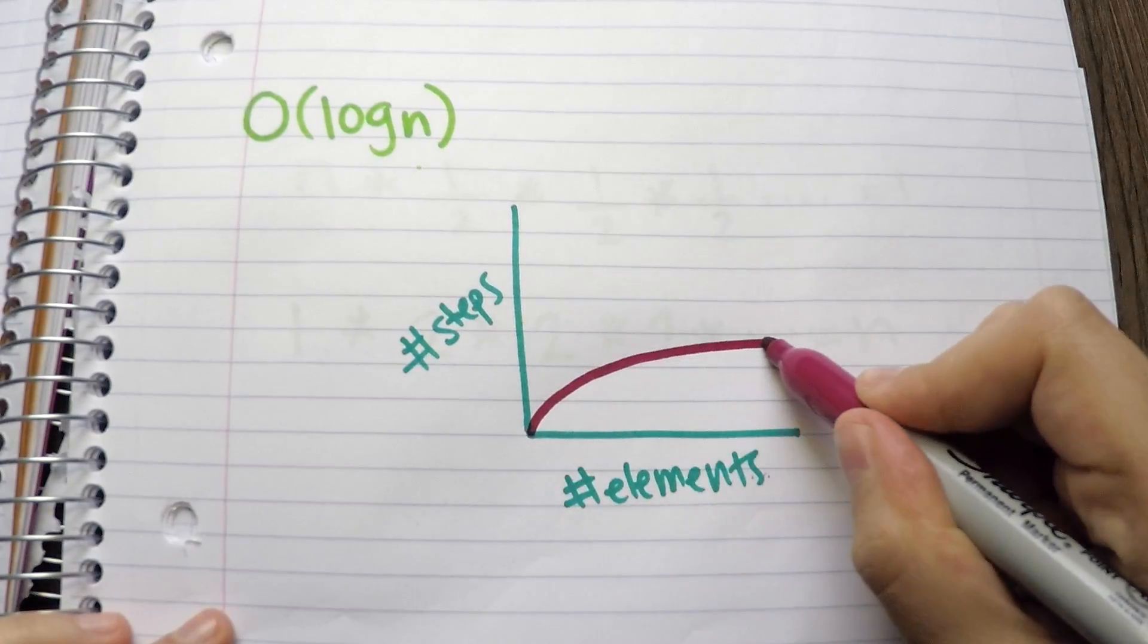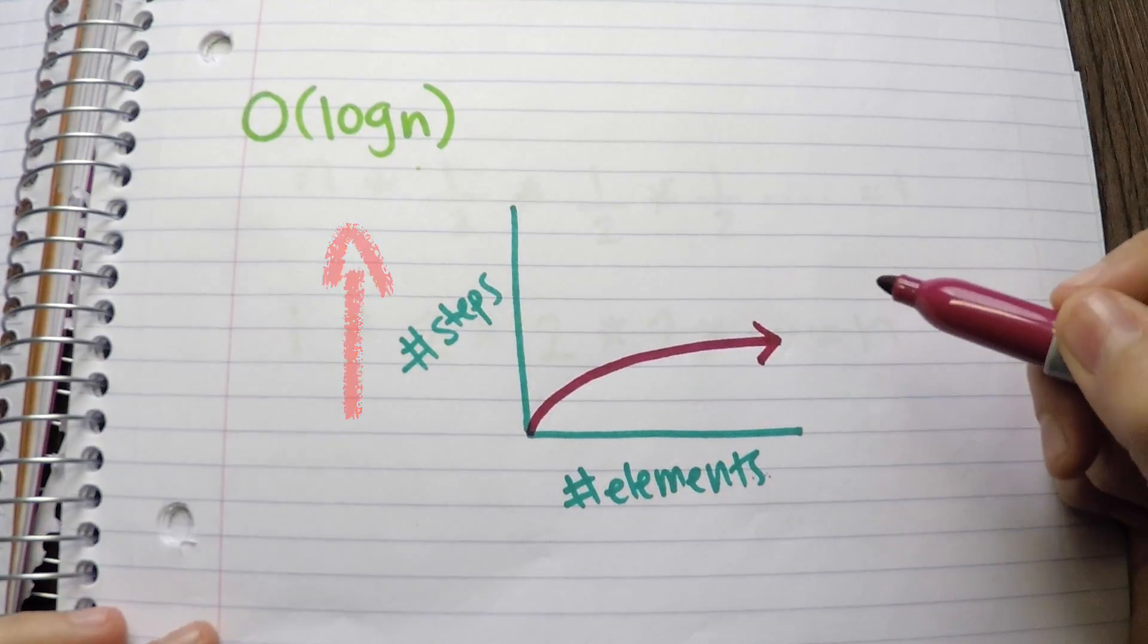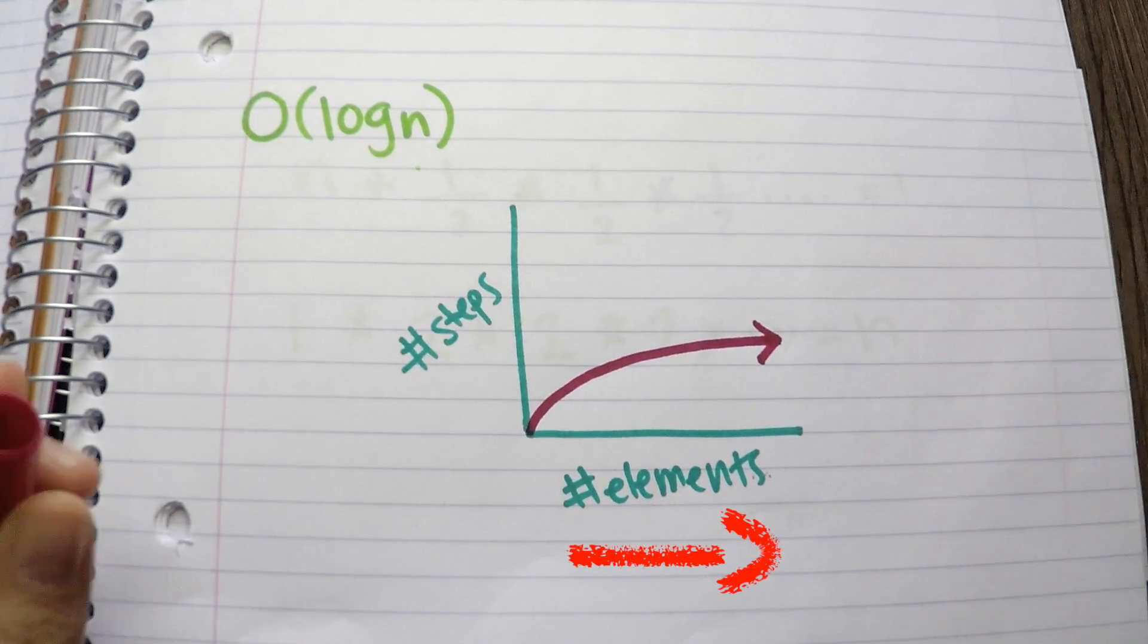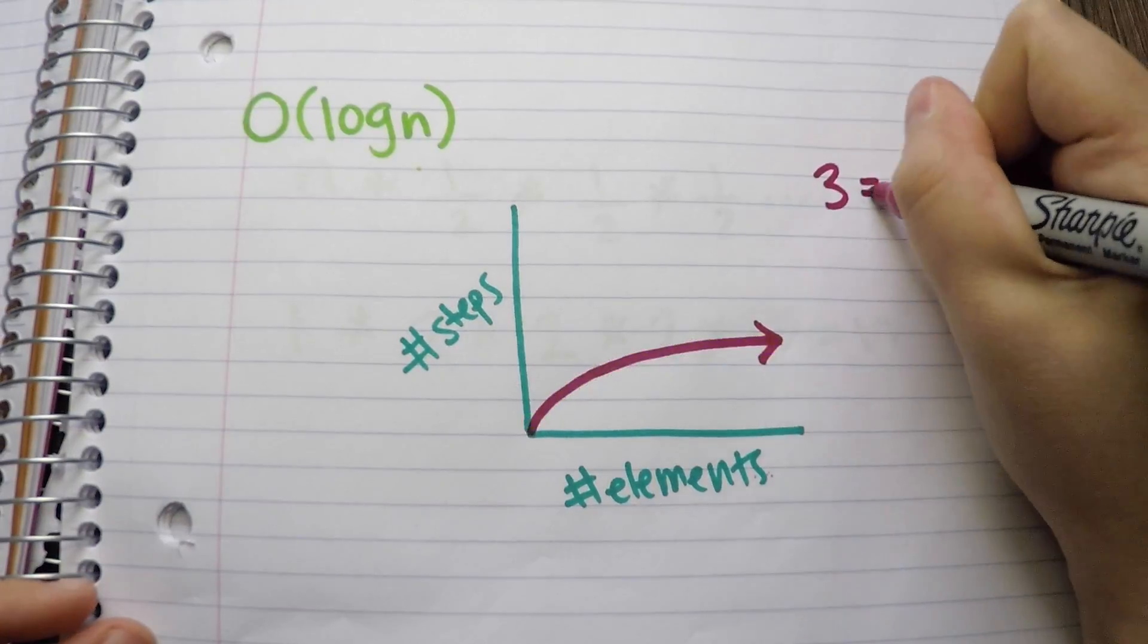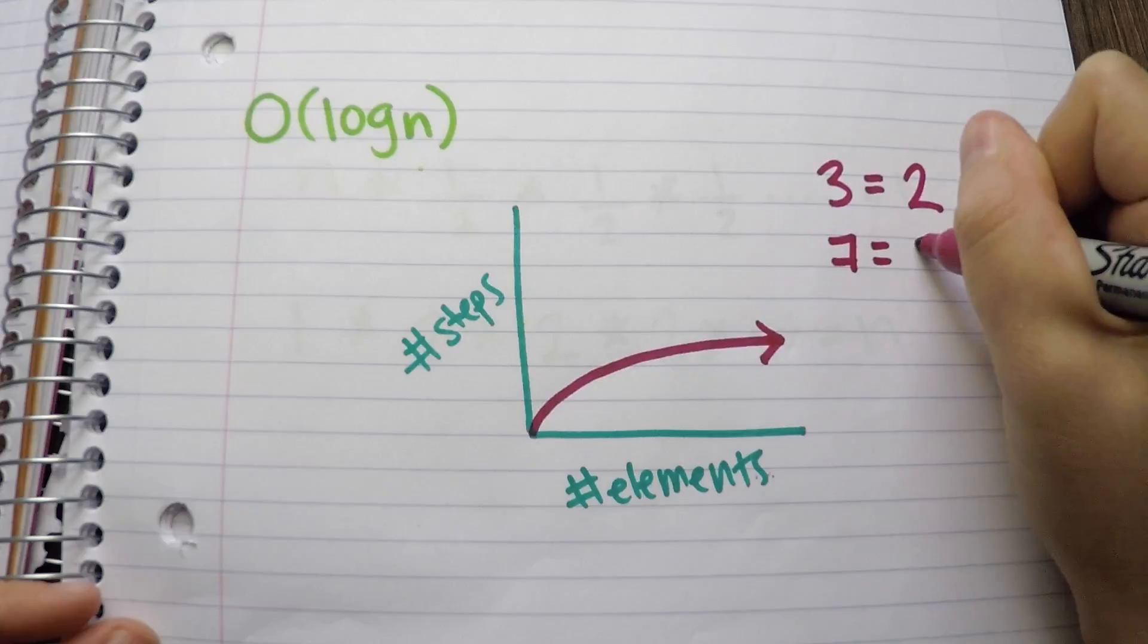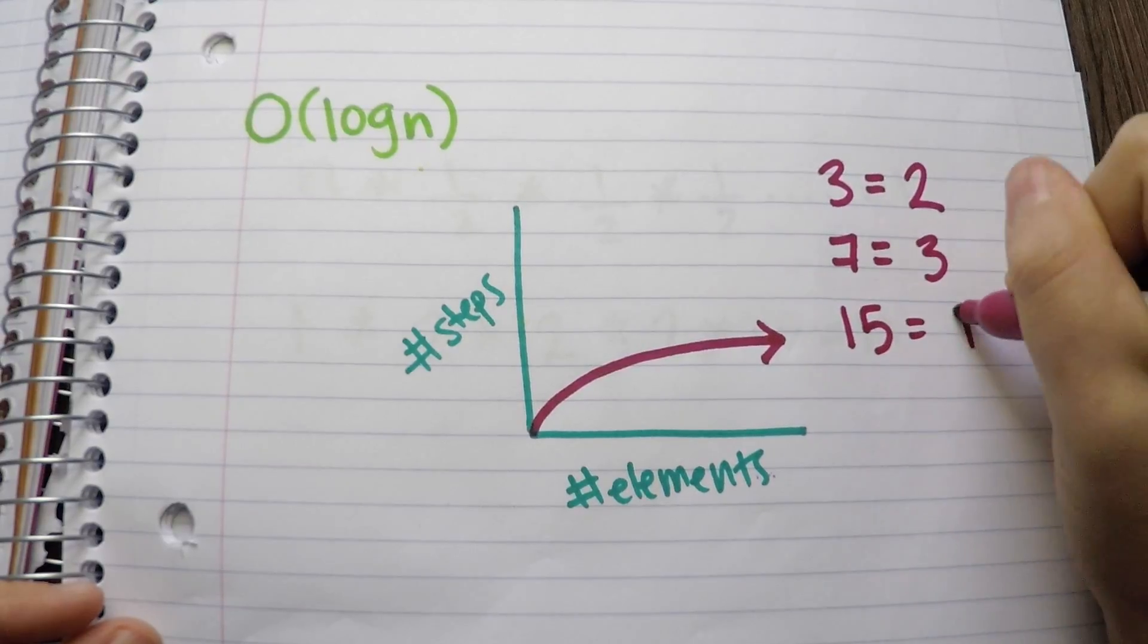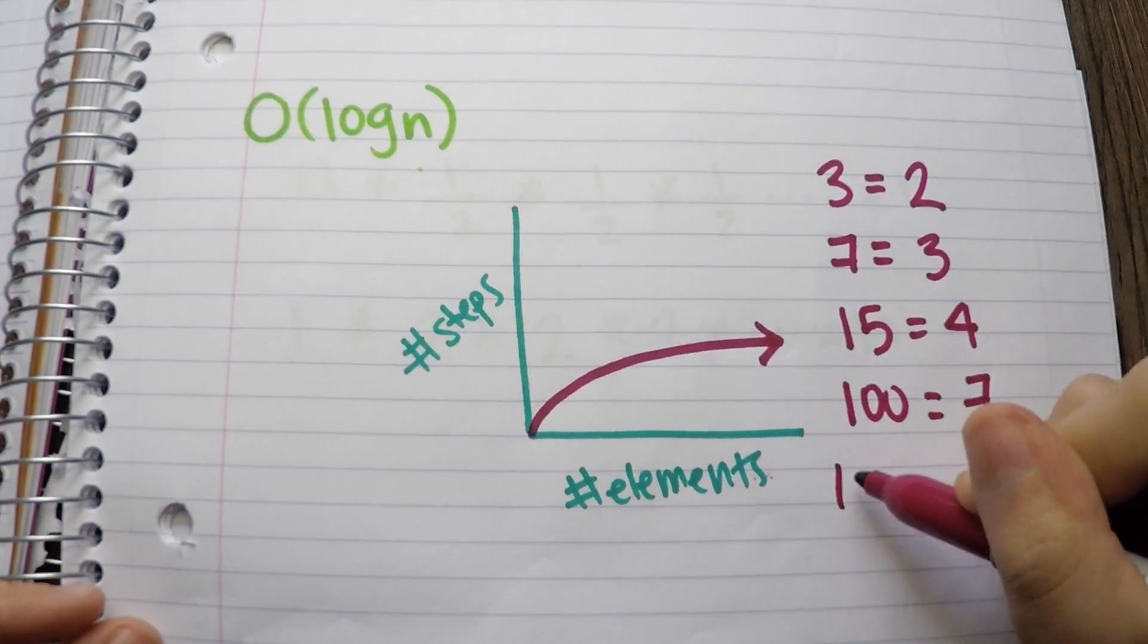O(log n) looks like this. Basically, the number of steps increase when the size of the book increases. It does not increase linearly. It will grow at a slow rate. For example, you search within three names and it will take two steps. Seven names, three steps. Fifteen names, four steps.